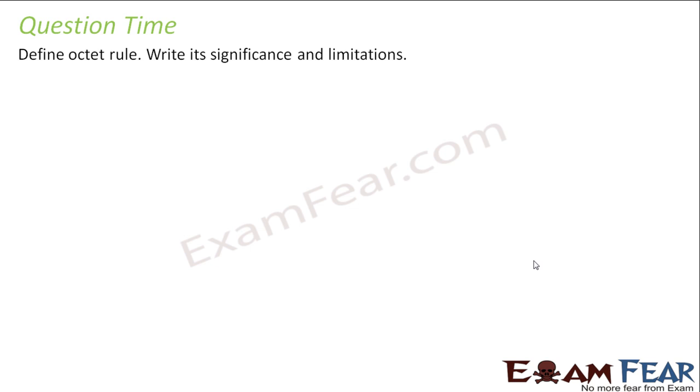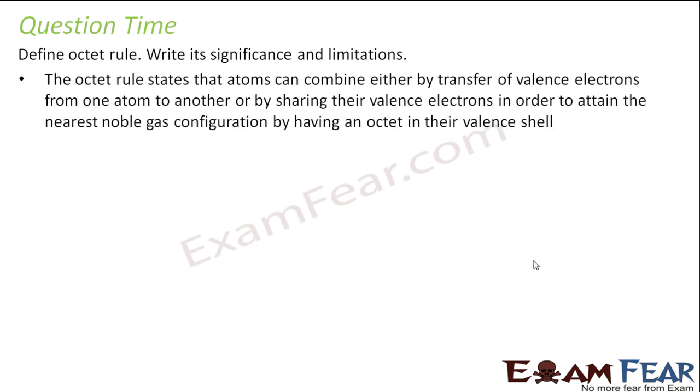What is the Octet Rule? What is the significance and limitation? So Octet Rule says that atoms combine either by transfer or by sharing of electrons, the valence electrons, to attain the nearest noble gas configuration in the valence shell. So valence shell should have noble gas configuration. To achieve that, they combine either by transfer of electrons or sharing of electrons.